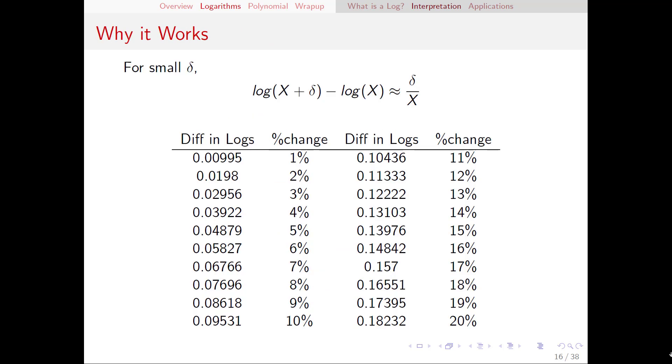Before we move on I want to talk a little bit about why logs tell us about percentage changes. Suppose we have a variable x and we make a small change to x delta. When delta is sufficiently small the log of x plus delta minus the log of x is approximately delta over x. The change divided by the original value is how we calculate a percentage change.